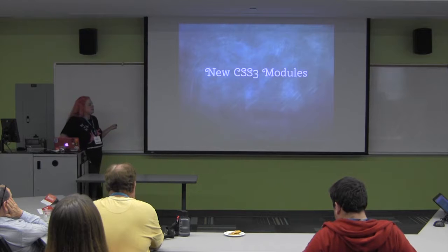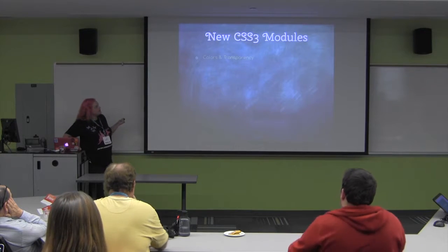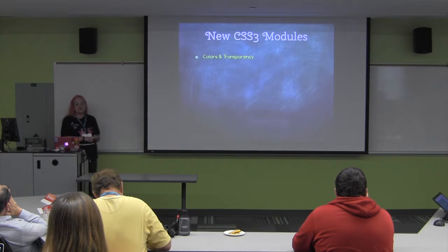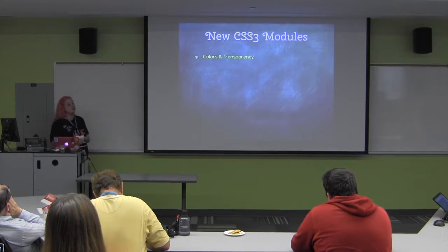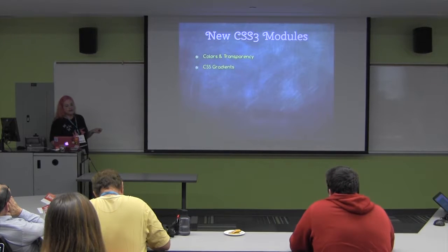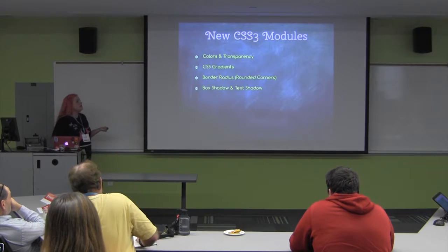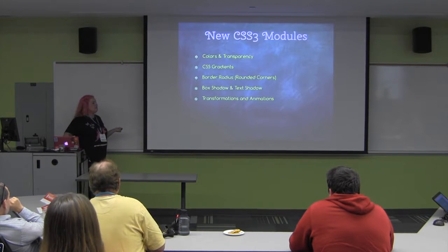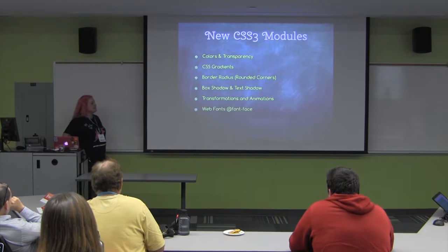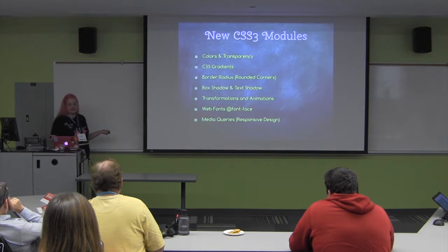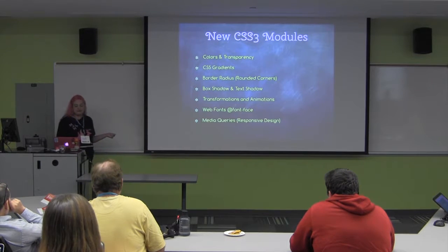Now let's talk about CSS3 modules - the fun stuff. Some things added to the CSS3 specification are: colors and transparency, CSS gradients, border radius (rounded corners), box shadow and text shadow, transformations and animations, web fonts using @font-face, and media queries - which are the building blocks of responsive design.